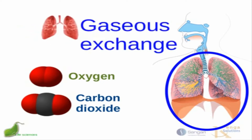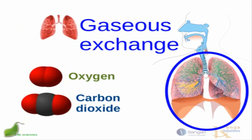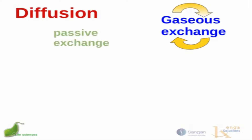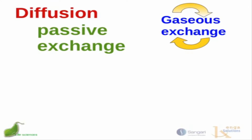What happens in the lungs is a topic known as gaseous exchange. It's important to realize that gaseous exchange happens in the lungs purely via diffusion. This is a passive exchange — gas diffuses across membranes passively.